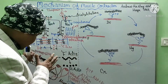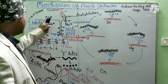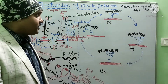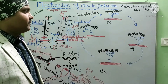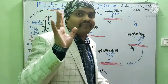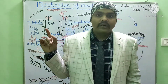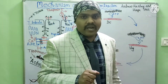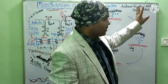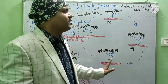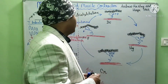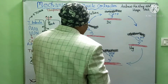Now let's see exactly what the mechanism of contraction is. Once calcium ion binds with troponin C, the process of contraction starts, and actin slides over myosin. This process is explained by the sliding filament theory, which was given by two groups of scientists — one group led by Andrew Huxley and the other group also led by Huxley. They explained how actin slides over myosin.